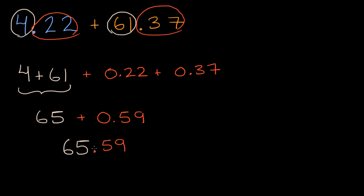As I've mentioned in previous videos, there are many different ways of adding decimals, and in future videos we'll learn arguably faster ways. But I want to show you multiple approaches so you get a sense of how to tackle it. This is how I do it in my head. If something cost 61 dollars and 37 cents, and you had to pay four dollars and 22 cents in tax, I would get 65 dollars and 59 cents.